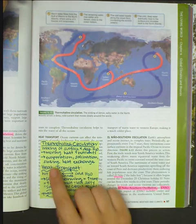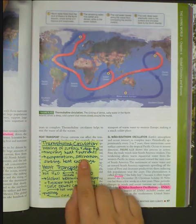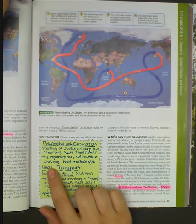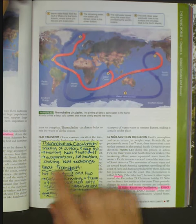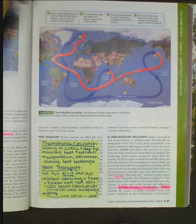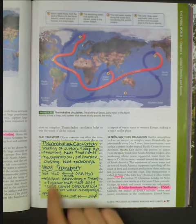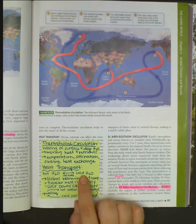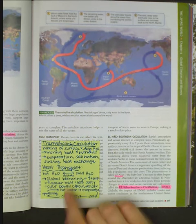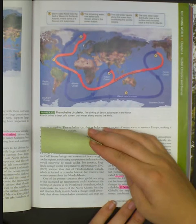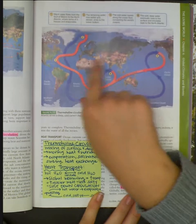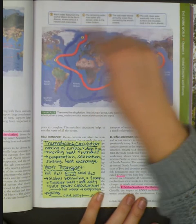Evaporation increases salination — 'saline' means salt. Whenever there's more salt, the water is going to sink. There's also heat exchange. Our last factor is heat transport: hot water and cold water change with latitude. Obviously the water at the equator is going to be much hotter than the water at the poles.